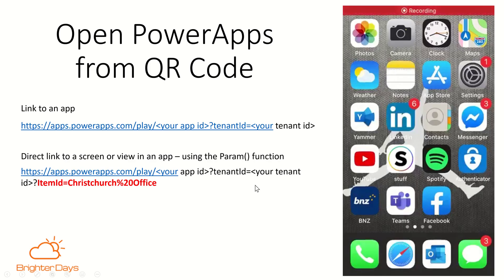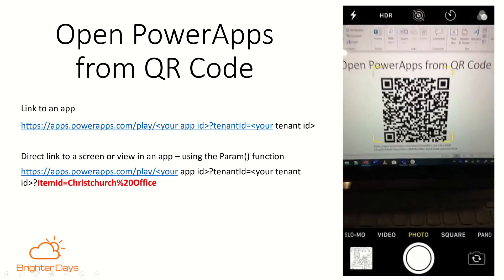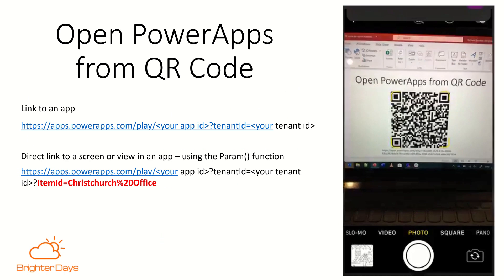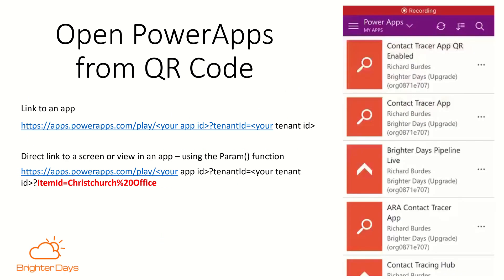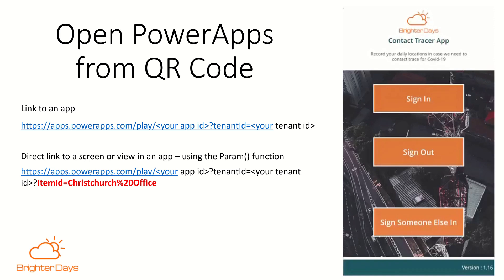Hey folks, it's Richard Burdes — Friday Tech Crush Hatch. A quick clip showing how you can use QR codes to open up PowerApps. It's really easy: just make a QR code and put the link to your app in the QR code. There are many QR code generators that will do that for you.